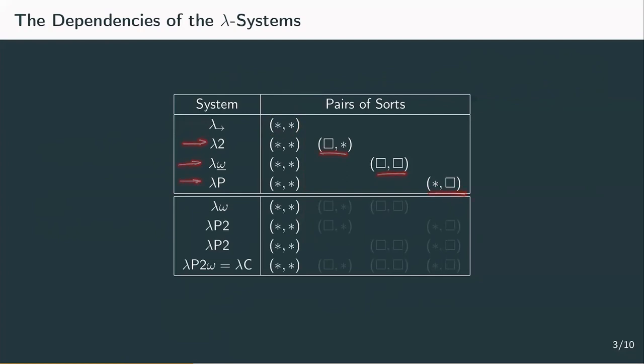The three systems that we analyzed in detail in the last videos all contain their own pairs. All systems that include lambda 2 contain the pair box star. Systems that include lambda P have star box. And systems that include lambda weak omega additionally have box box. And of course, lambda C has every pair.